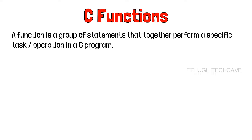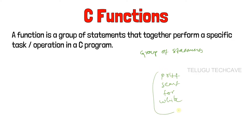I am going to talk about C Functions. First of all, what is a function? A function is a group of statements that together perform a specific task or operation in a C program. If we perform a particular task, we can make a group or block — a function. Simply put, a function is a group of statements or block of code. For example, printf, scanf, for loop, while loop — these are some statements in a C program. If it is a block or group, it is a function.